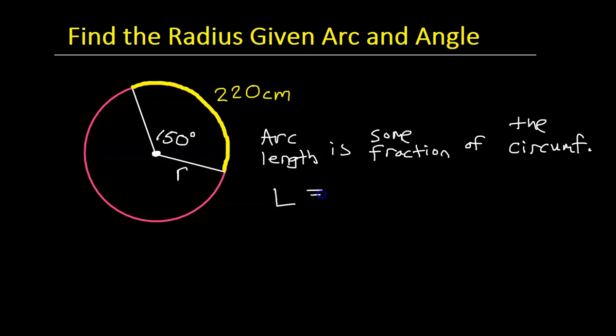So the arc length equals some fraction. Well, where is this fraction going to come from? This is where the central angle comes in.